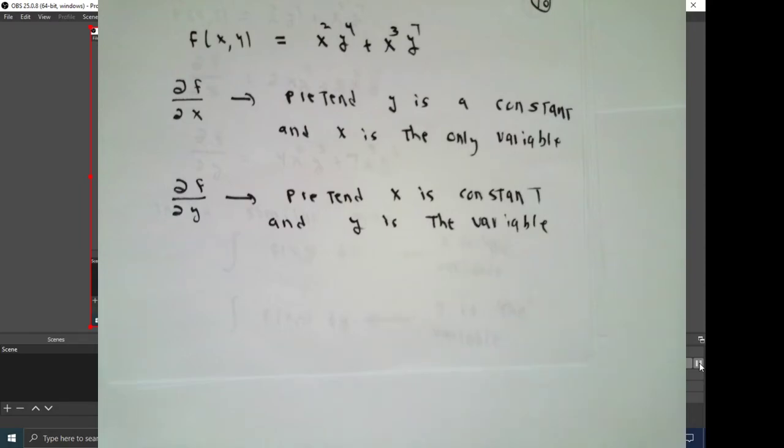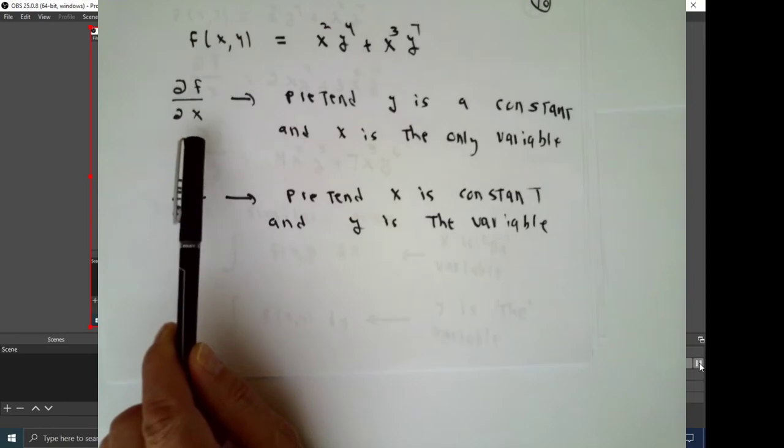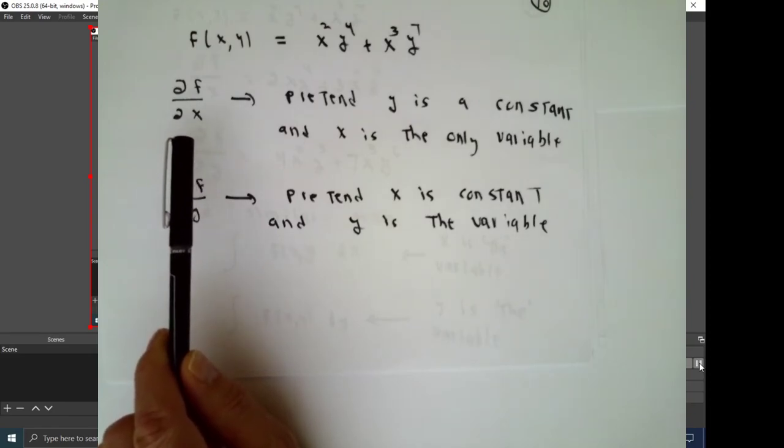To make this more concrete, I'm going to think of having a function f, which depends on two independent variables, x and y. F of x and y is evaluated this way. You take whatever was in the first slot and square it, raise the number in the second slot to the fourth power, and then add in the cube of what was in the first position times the seventh power of what's in the second position.